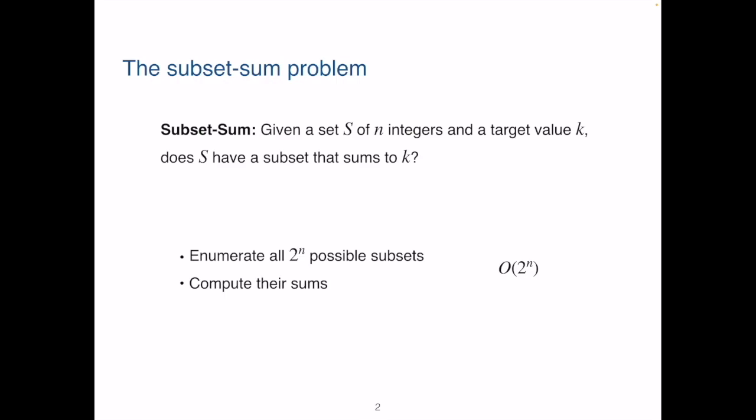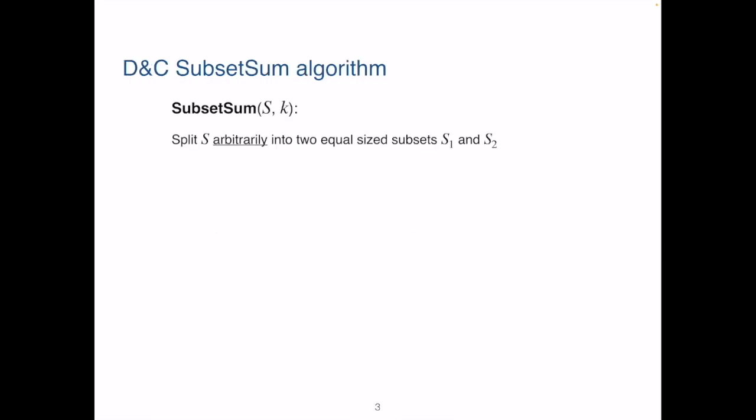Now, what about divide and conquer? How much can it help? So, divide. It's clear to us now that we want to split set S into two equal size subsets. This can be done arbitrarily, meaning we can put a randomly picked set of numbers in S1 and then the rest in S2, as long as the two subsets are of the same size.